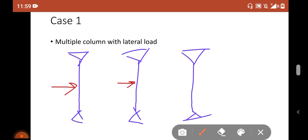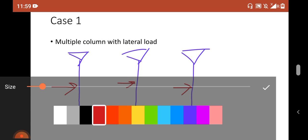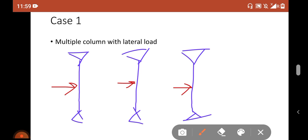So what will happen? Simply all these columns try to buckle like this - they try to buckle like this one, this one, and this one. So definitely to resist this load, or you can say to counter this load by using these three columns, you need to design all three columns with an effective length of L.